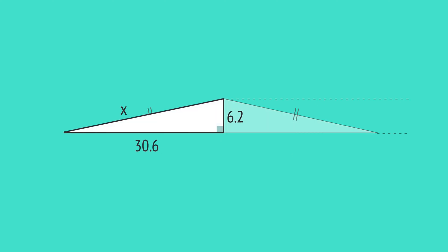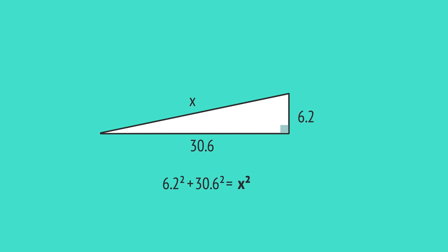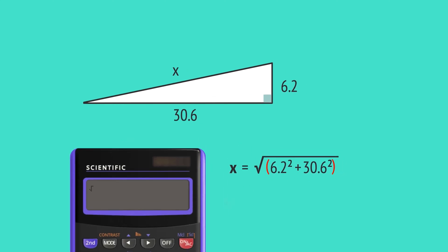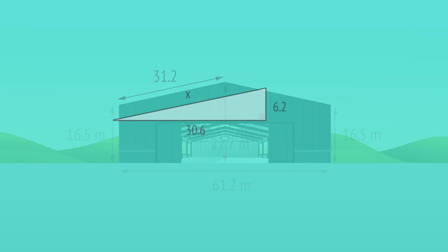Then we use one of these right-angled triangles to calculate the slope length x, the longest side. Substitute these values into the formula, then take the square root to give the calculation for x, and enter it into a calculator. This gives x equals 31.2 metres rounded to one decimal place, and so the sloping roof length of the aircraft hangar is 31.2 metres.